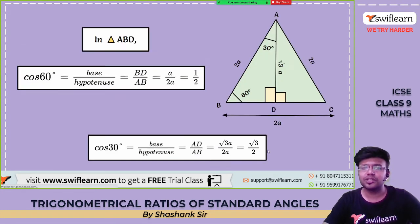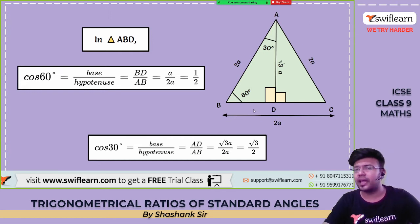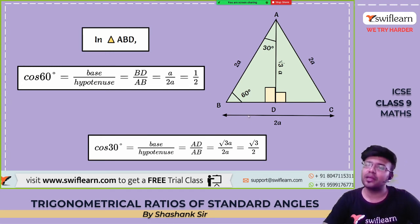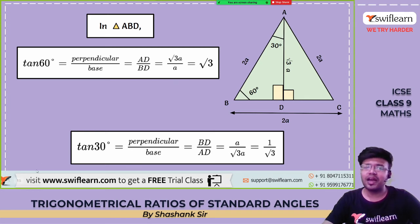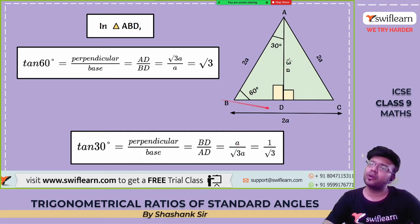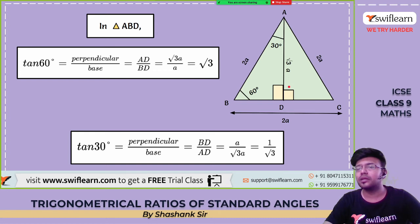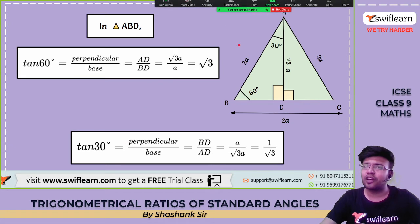Sin 60° = AD/AB = a√3/2a = √3/2. Sin 30° = BD/AB = a/2a = 1/2. Cos 60° = BD/AB = a/2a = 1/2. Cos 30° = AD/AB = a√3/2a = √3/2. Tan 60° = AD/BD = a√3/a = √3. Tan 30° = BD/AD = a/a√3 = 1/√3.